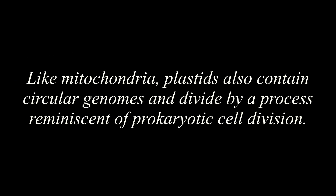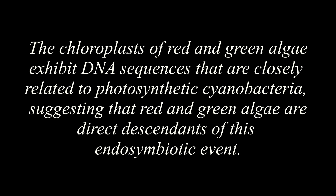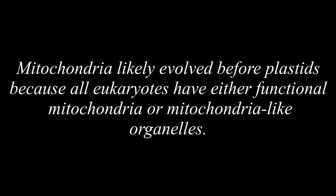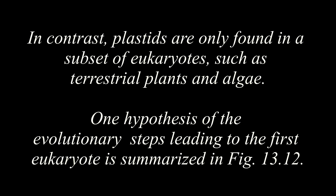Like mitochondria, plastids also contain circular genomes and divide by a process reminiscent of prokaryotic cell division. The chloroplasts of red and green algae exhibit DNA sequences that are closely related to photosynthetic cyanobacteria, suggesting that red and green algae are direct descendants of this endosymbiotic event. Mitochondria likely evolved before plastids because all eukaryotes have either functional mitochondria or mitochondria-like organelles. In contrast, plastids are only found in a subset of eukaryotes such as terrestrial plants and algae.